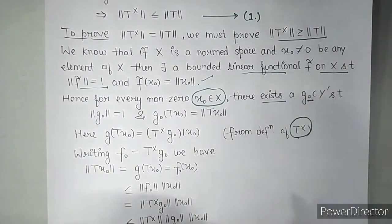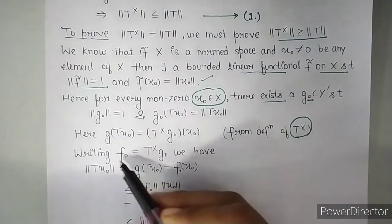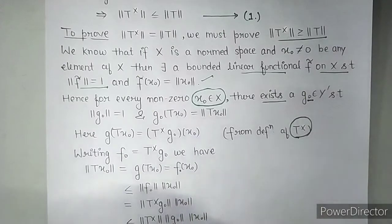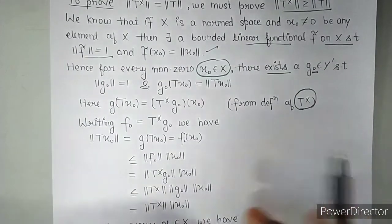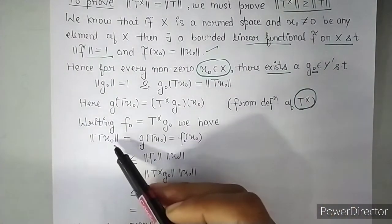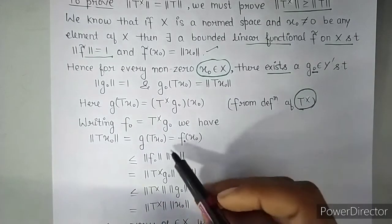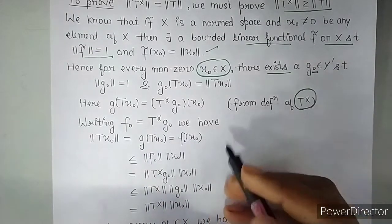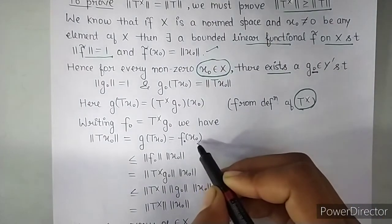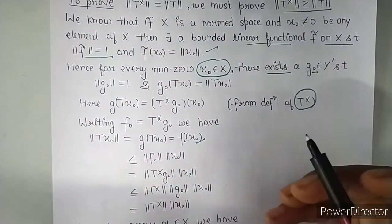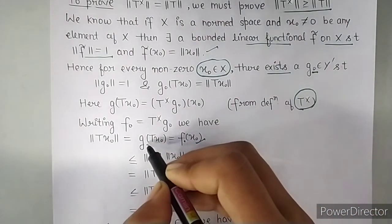So we will get norm of TX0 equals GTX0 and GTX0 is what, this equals F of X0, F0 X0, done. One more thing ahead, here also there is a modulus, OK?